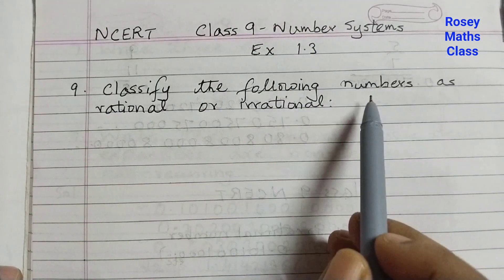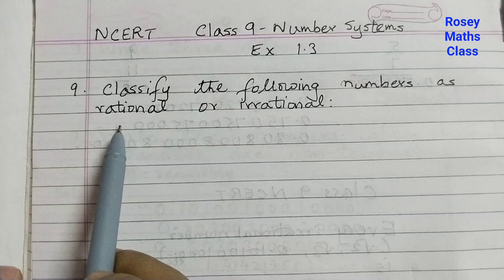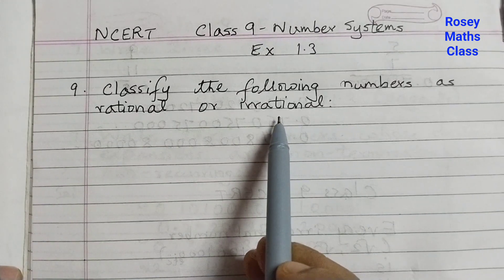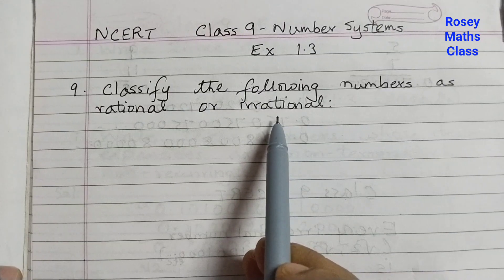Classify the following numbers as rational or irrational. We are given a few numbers and we need to find out whether they are rational numbers or irrational numbers.